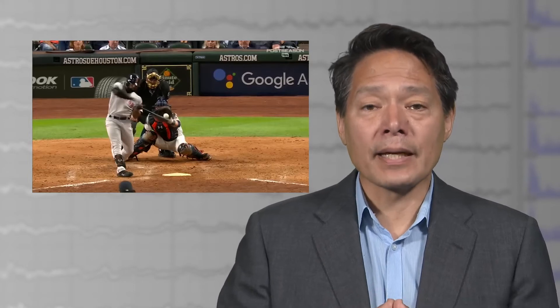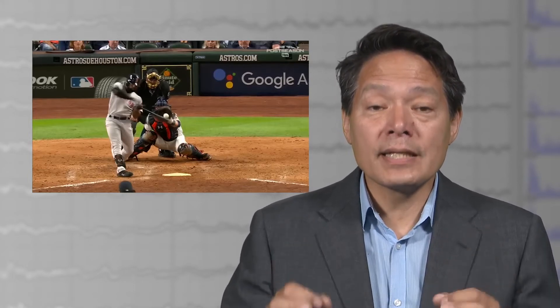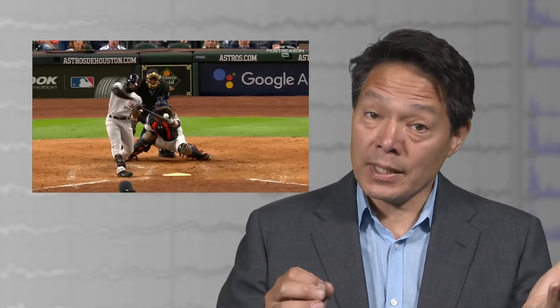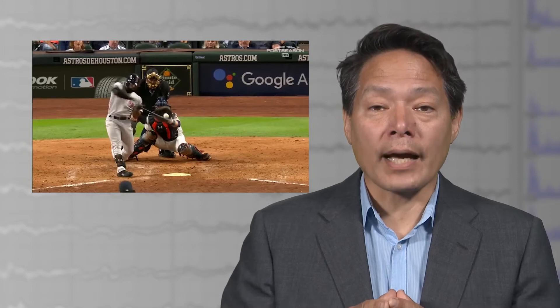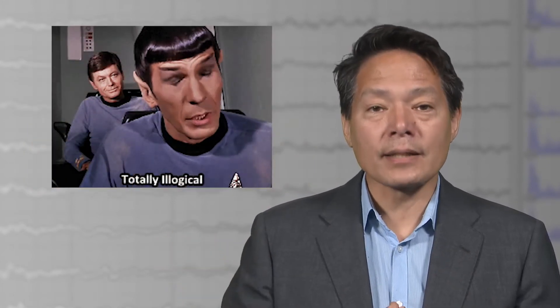The mistake that Libet is making in his logic is to say that the fact that there was preceding unconscious neural activity, which is analogous to the pitch, implies that it is the sole cause of the later motor act, which is analogous to the home run. But this is a pretty basic logical mistake.